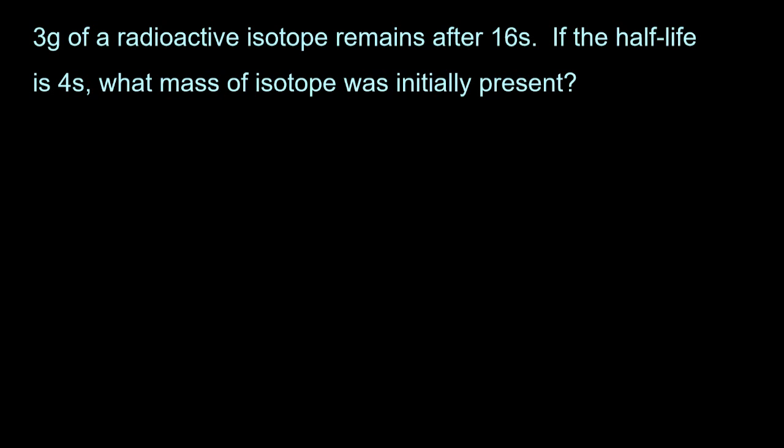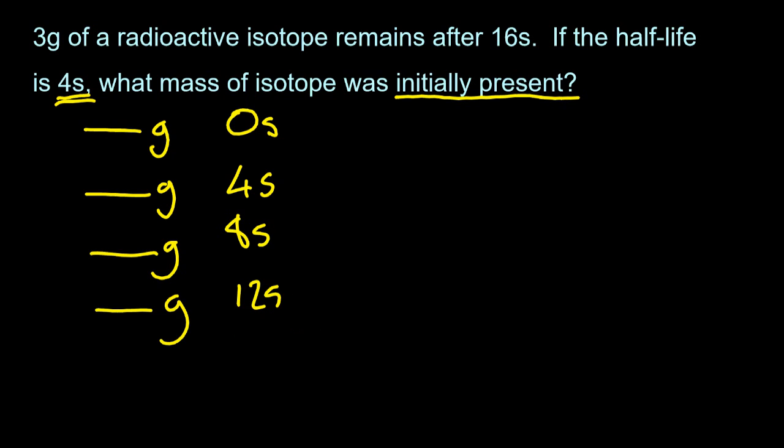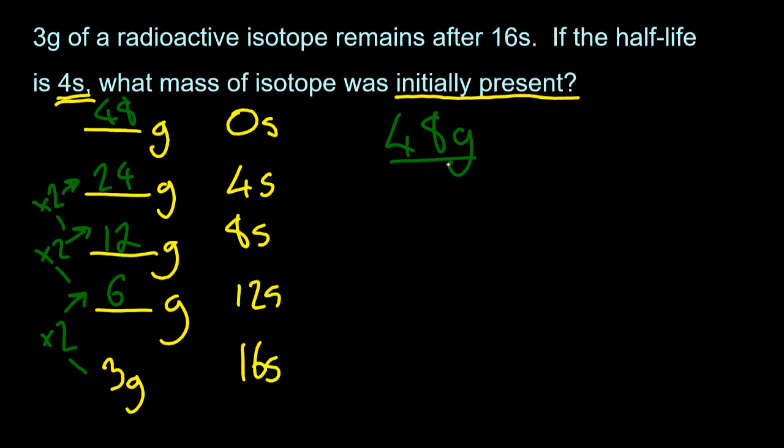Next question. Three grams of radioactive isotope remains after 16 seconds. If the half-life is 4 seconds, what mass of isotope was initially present? I don't know how many grams there were at 0 seconds. After 16 seconds, I've got 3 grams. I went down in 4-second increments because the half-life is 4 seconds. After 12 seconds, there must have been 6 grams because of that doubling. Double it again to find out at 8 seconds. Once more for 4 seconds. So at the beginning, there must have been 48 grams at 0 seconds. Let me check: 48 grams at 0 seconds, half-life is 4 seconds, so I've got 24 grams. Yeah, that looks good.